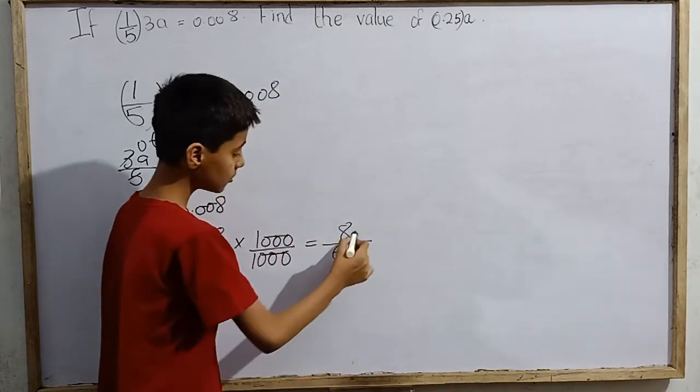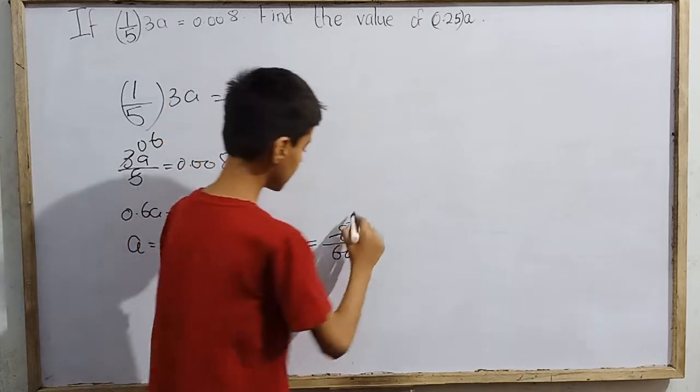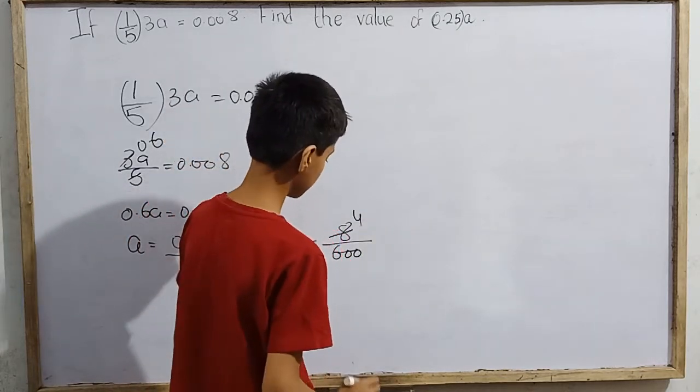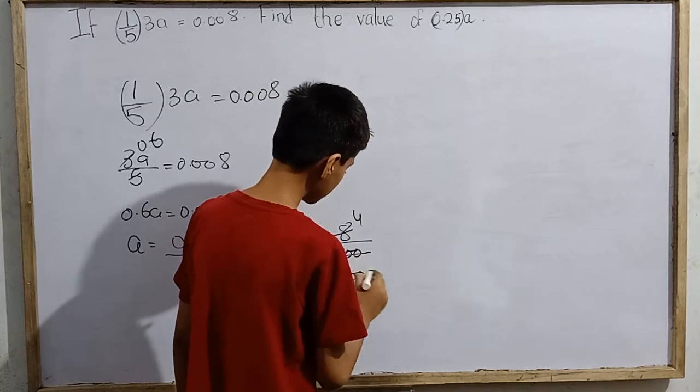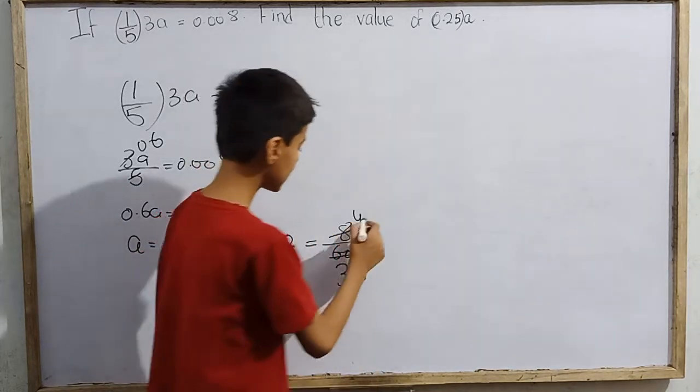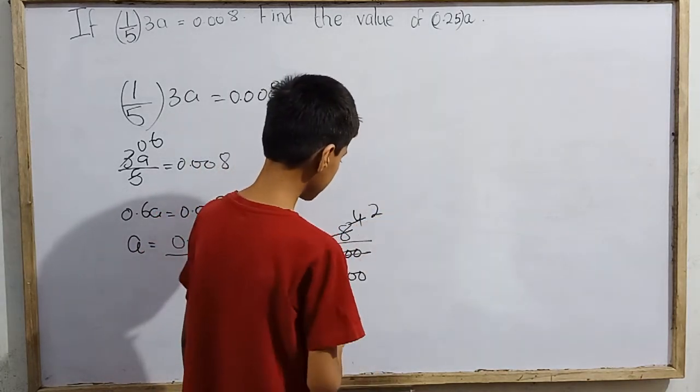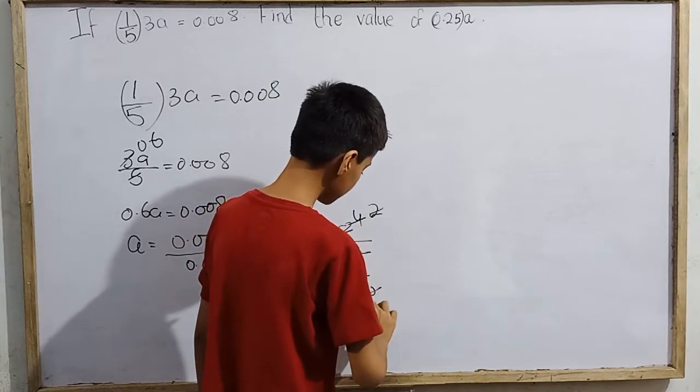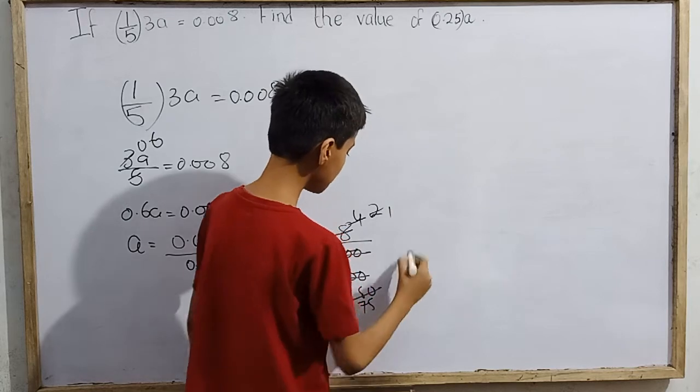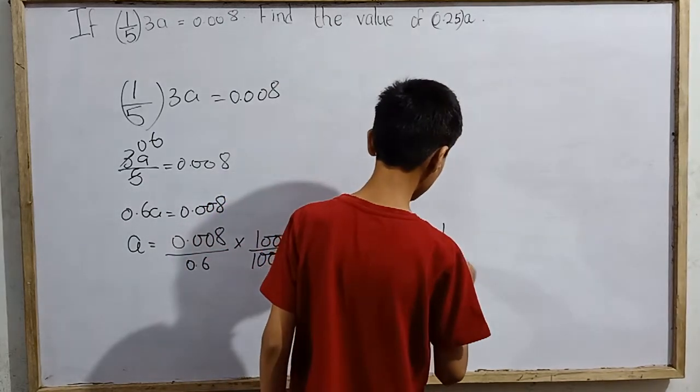Okay. Now we know that two fours are what? Eight. And here is two into 300, that is 600. Again, this is two and this is 150. This is again one and 75. So we get it as one over 75.